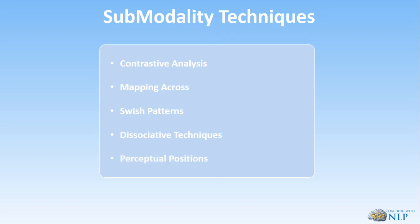Next we have perceptual positions. This involves shifting viewpoint and viewing a specific internal representation from one of three different positions. First position is looking through your own eyes. Second position is looking through another person's eyes — usually the significant person in the event. So if you had a disagreement with somebody, first position is you in the disagreement, second position is you taking on the position of the other person. Third position would be totally dissociated — like you fly above the entire event and look down, noticing the conversation between those two people. This is very useful for incorporating new learnings.